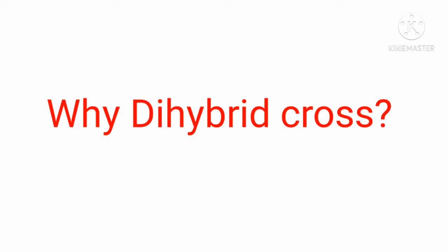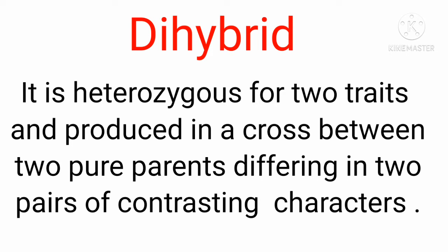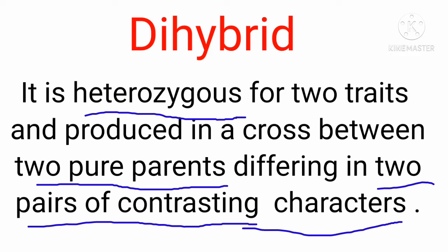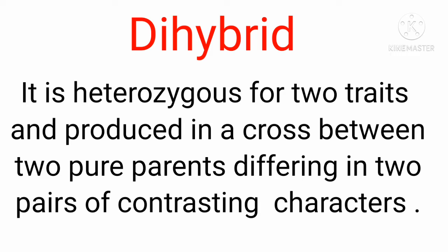A dihybrid is heterozygous for two traits, produced in a cross between two pure parents differing in two pairs of contrasting characters. 'Hetero' stands for different, so different types of gametes. For example, seed color and seed shape — yellow and round — are two pairs of contrasting characters. One parent has yellow round seeds and another has green and wrinkled seeds; these pure parents cross to form a hybrid.